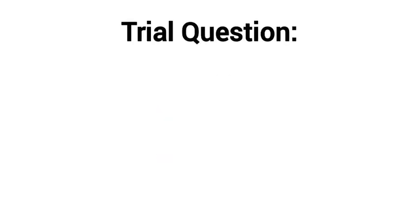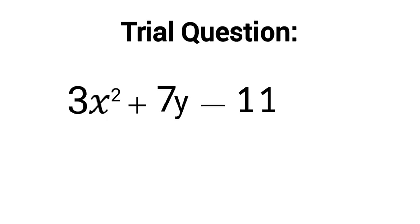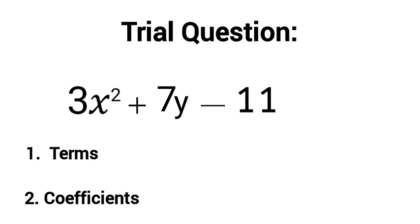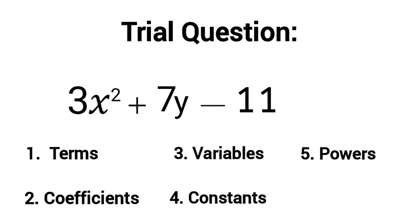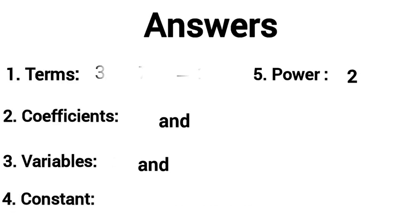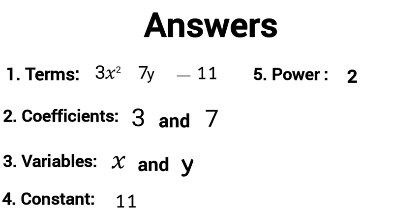Now that you know these terminologies, let me give you an expression to identify all the terminologies. The expression is 3x squared plus 7y minus 11. Please identify the terms, coefficients, variables, constant, and powers in this algebraic expression. Feel free to pause the video to do the work. Here are the answers — how many did you get right? Please tell me in the comment section below.